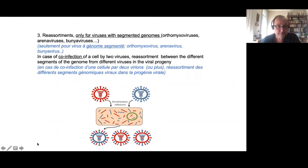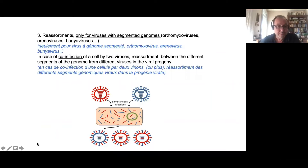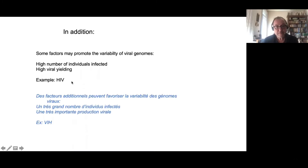Additional factors promote viral genome variability, particularly the high number of infected individuals and high viral yield. For example with HIV, millions of people are infected worldwide and each infected cell produces large numbers of virus particles.